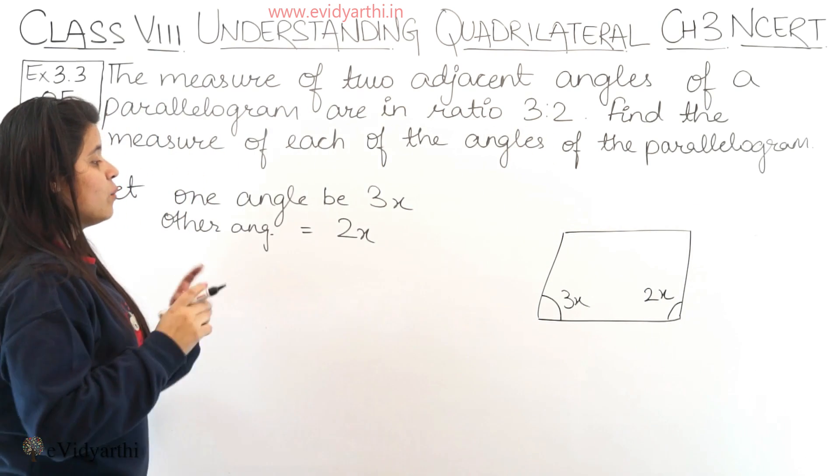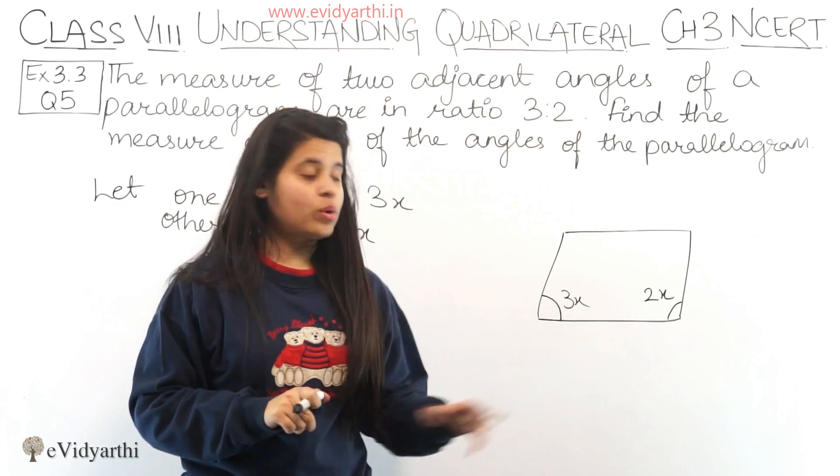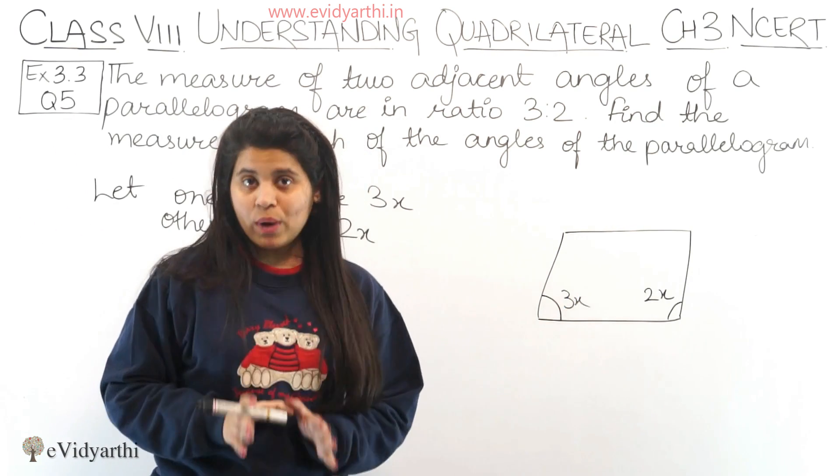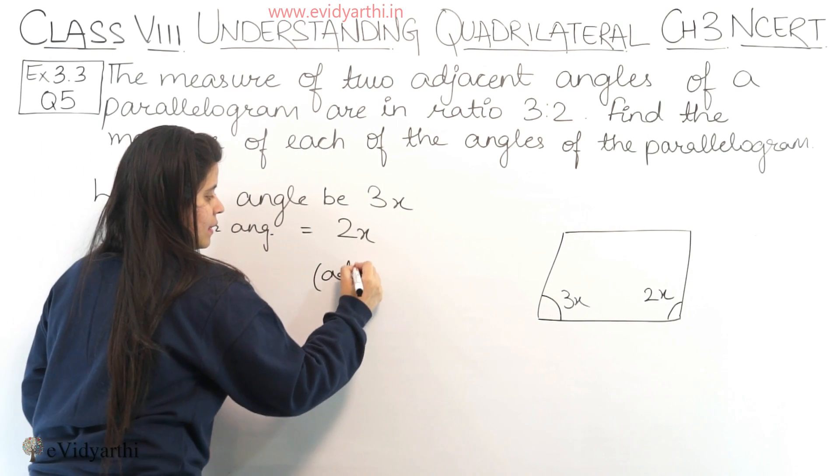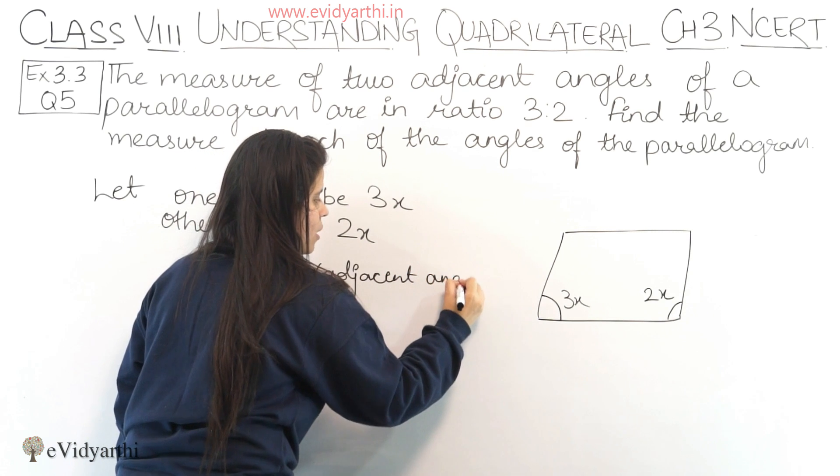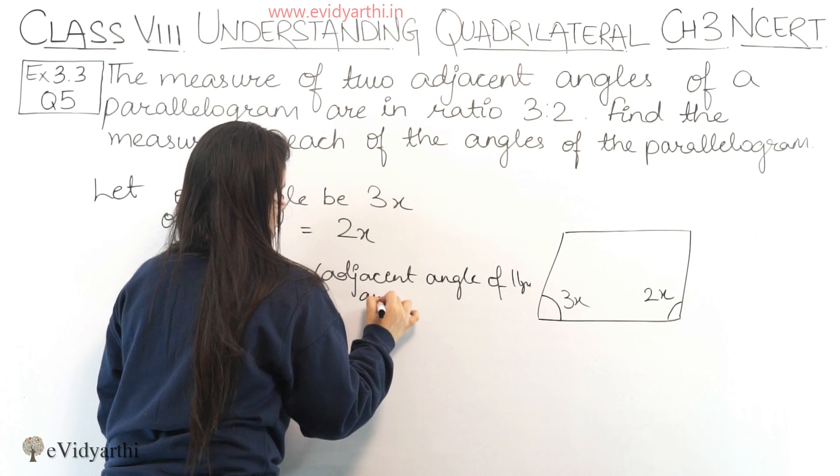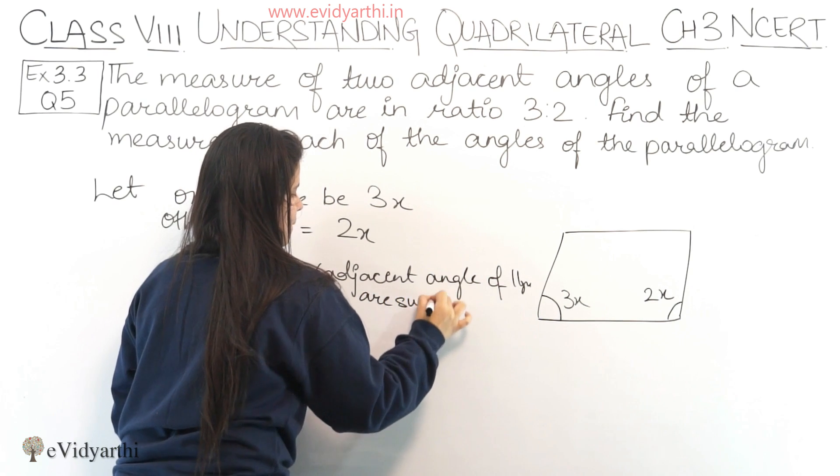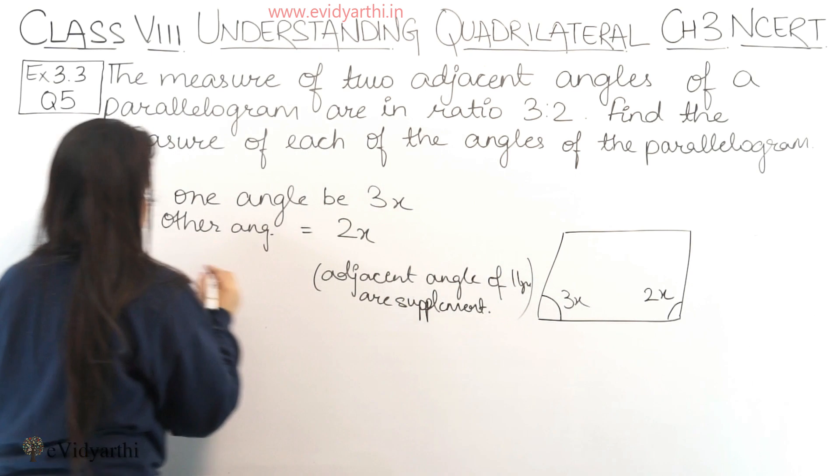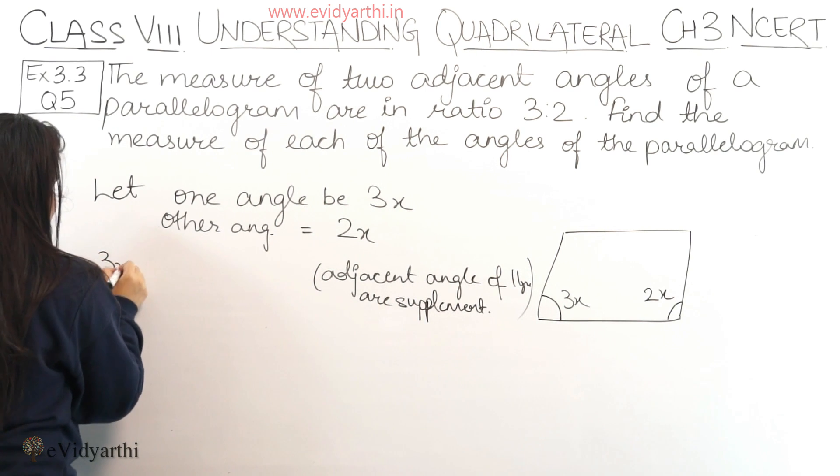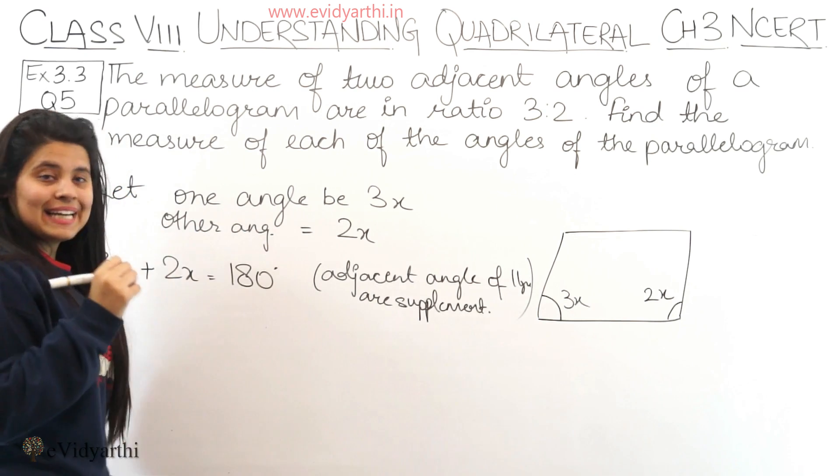Now, we know that adjacent angles of a parallelogram are supplementary. This means 3x plus 2x equals to 180 degrees.